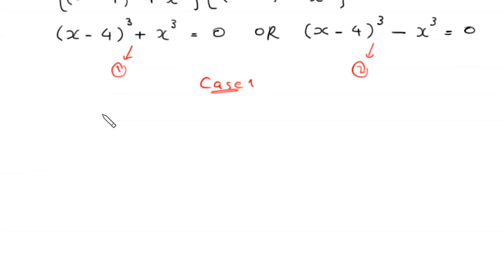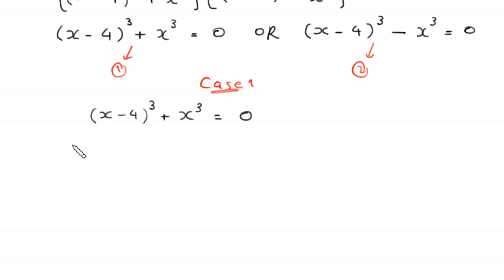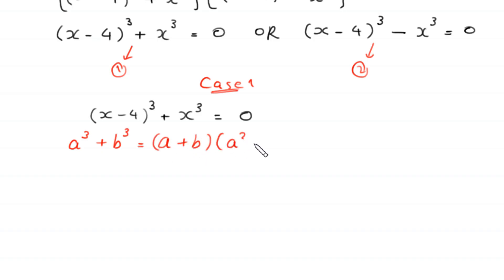This is Case 1 and this is Case 2. First we solve Case 1. Case 1 is: (x minus 4) cubed plus x cubed is equal to 0. In this expression we have a sum of cubes, so by using the algebraic identity a cubed plus b cubed equals (a plus b)(a squared minus ab plus b squared).